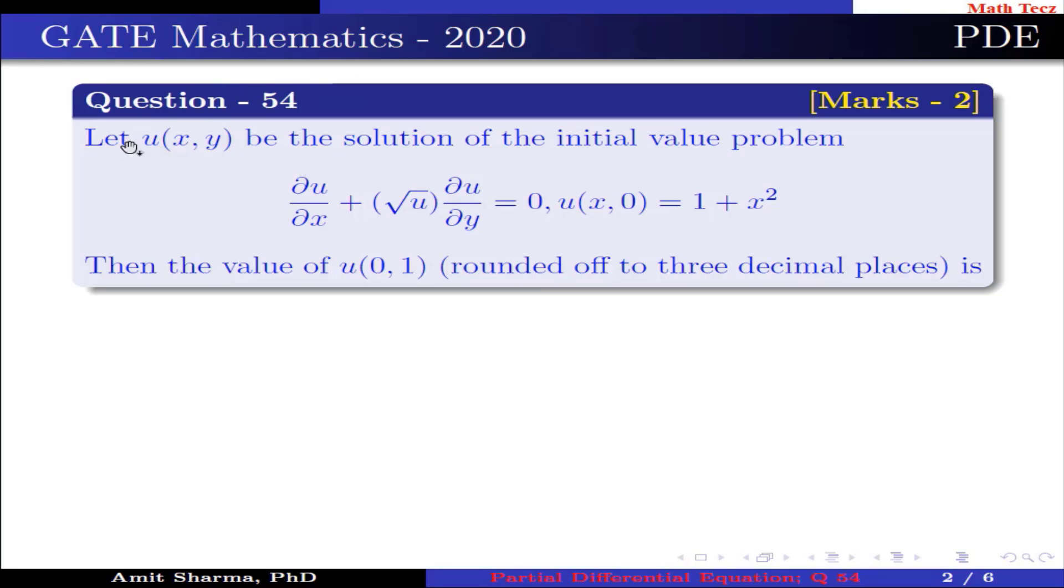Question is: let u be the solution of initial value problem ∂u/∂x + √u ∂u/∂y = 0, u(x,0) = 1 + x². Then the value of u(0,1) rounded off to 3 decimal places is